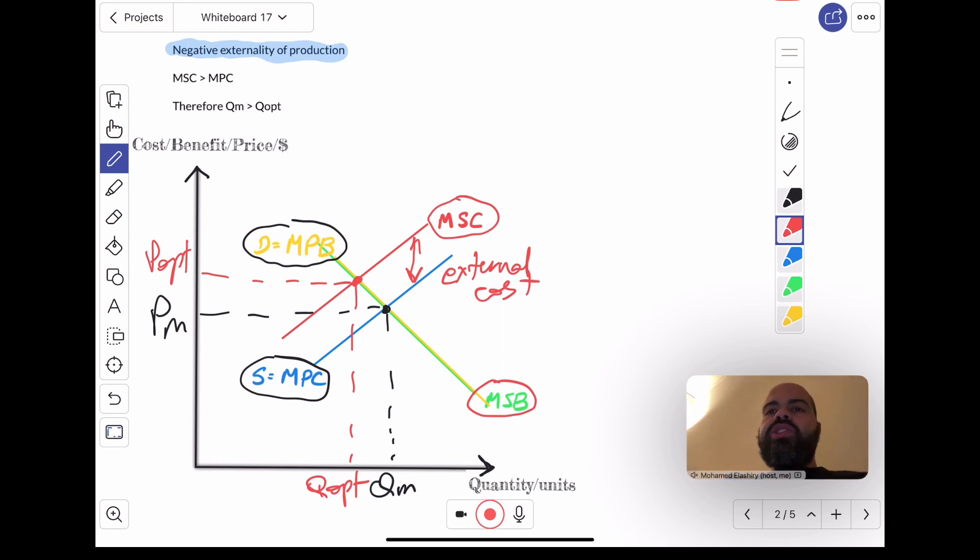This results in a situation where QM is greater than QOpt. You can see here, QM is greater than QOpt. There is an over-allocation of resources, over-allocation of resources, and it's taking the form of over-production.